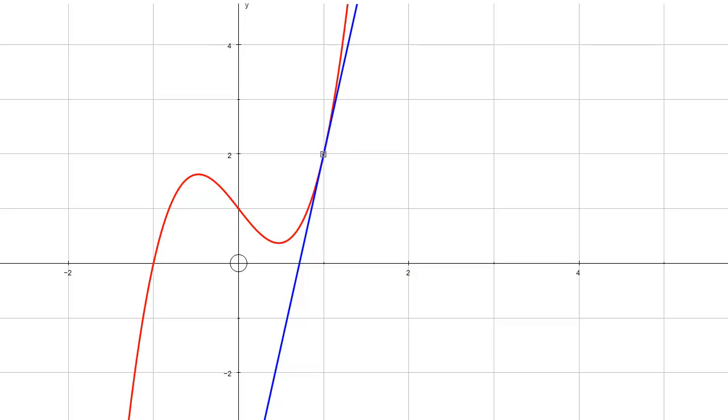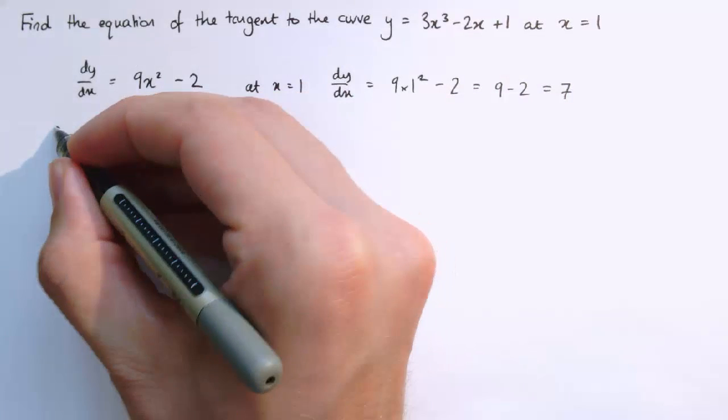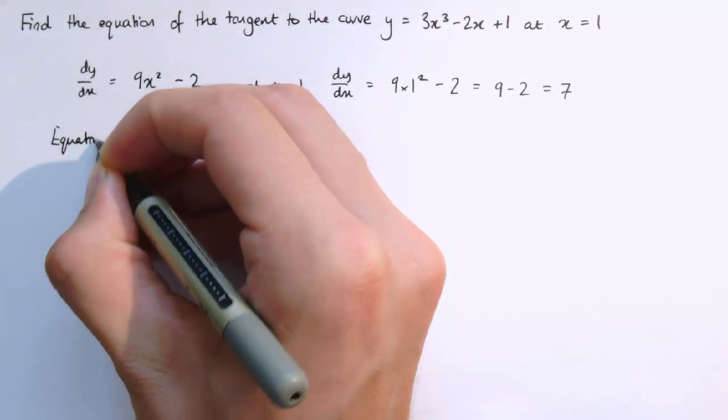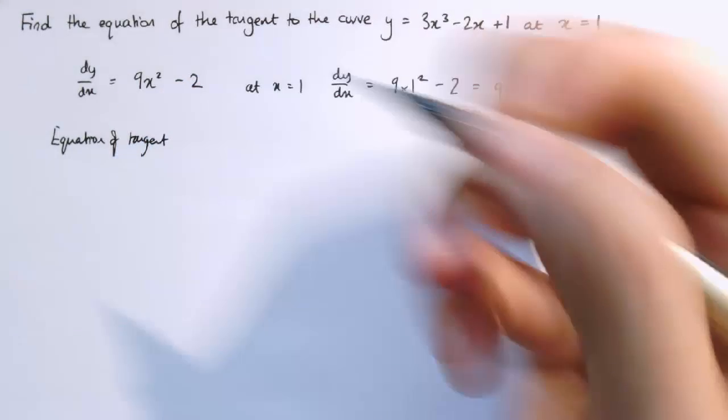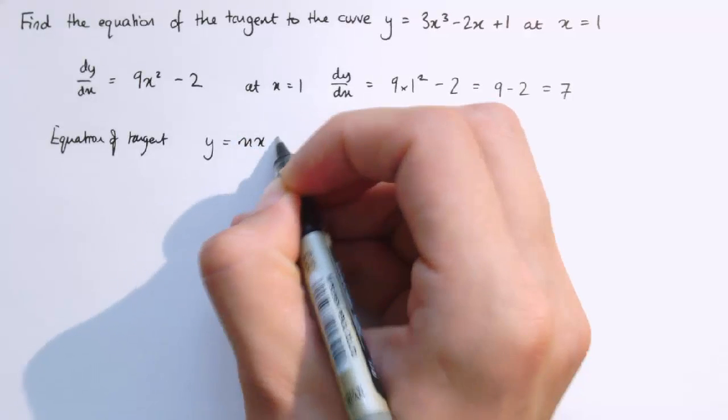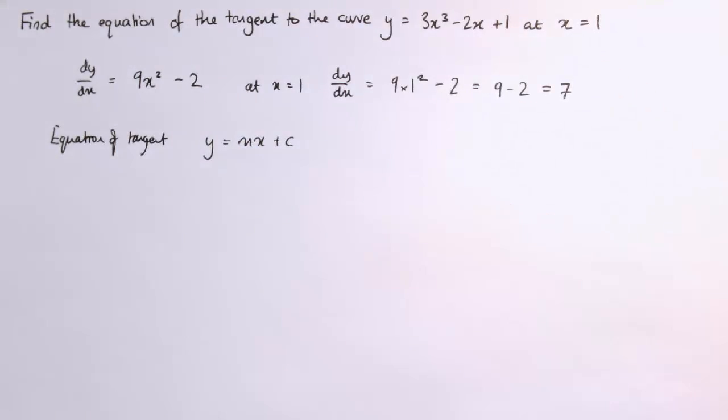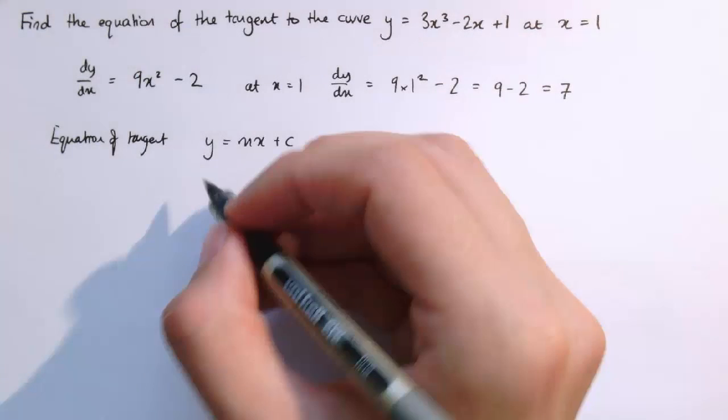It's a straight line, so from what you've done on straight lines, the equation of the tangent will have the form y equals mx plus c, where m is the gradient and c is the y-intercept or a value we need to find.